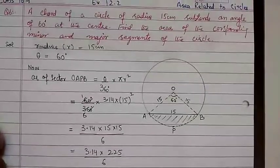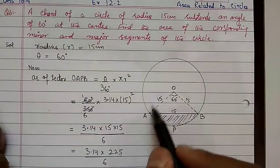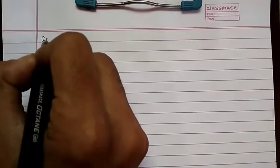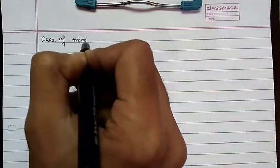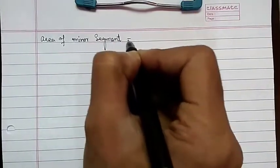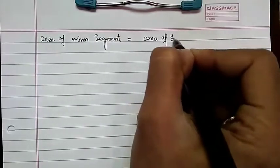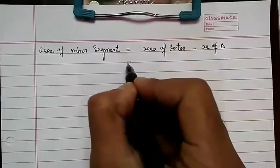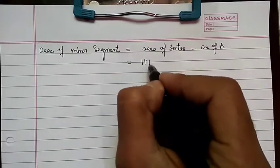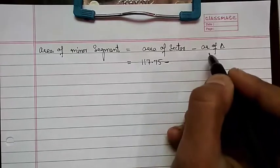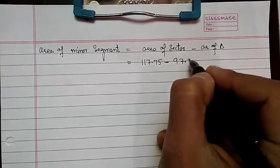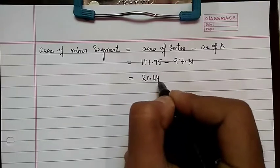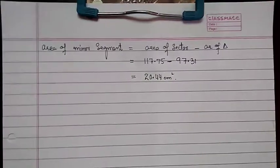Area of the minor segment = area of sector − area of triangle. From the diagram, this is the remaining portion after subtracting the triangle from the sector. Area of minor segment = 117.75 − 97.31 = 20.44 cm².